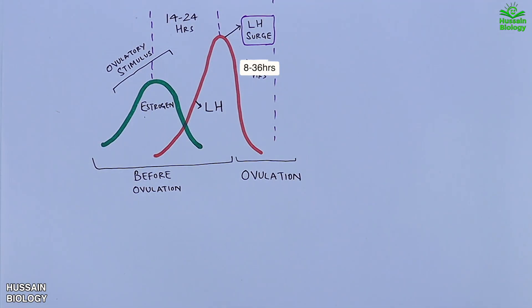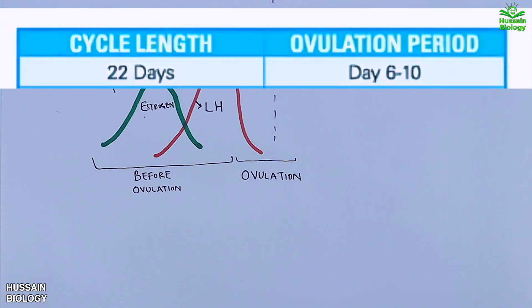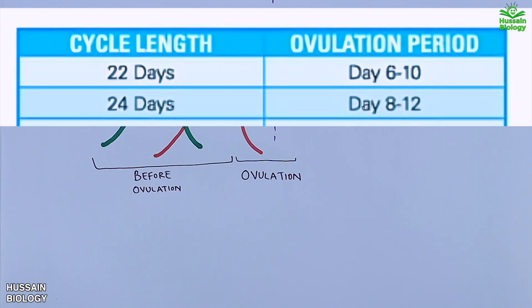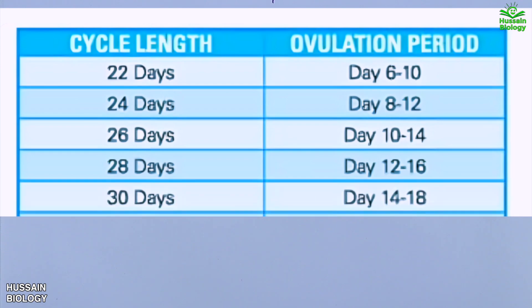Ovulation occurs between 8 to 36 hours of the LH surge. The timing and cycle varies in females. In this diagram we have a cycle length of 22 days, which has an ovulation period between days 6 to 10. Likewise, we have different cycle lengths with varying ovulation periods shown in the diagram.